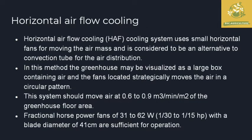Let's look at the horizontal air flow cooling system. It uses small horizontal fans. Compared to the fan-and-pad type, these are small fans. The air mass circulates and this is considered an alternative to the convection tube. It is useful for air distribution. If a large convection tube is used in this method, it will be used to make the air flow in a circular pattern. In this system, the capacity is 0.6 to 0.9 cubic meters per minute per square meter of greenhouse floor area.